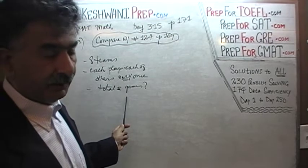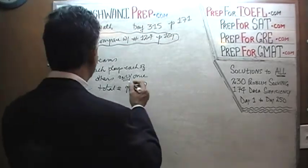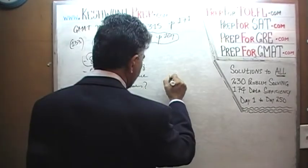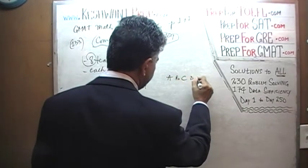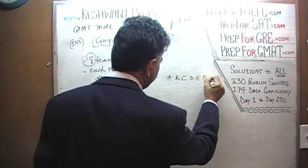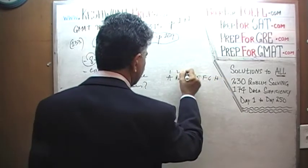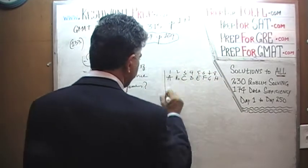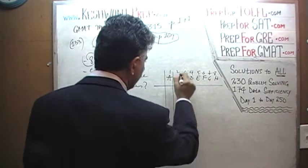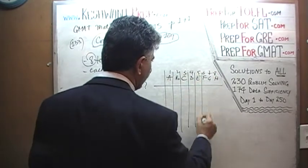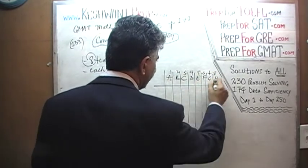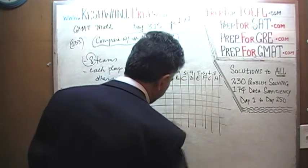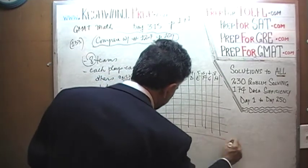We have 8 teams: A, B, C, D, E, F, G, and H. That's 8 teams. We set up a grid — 8 teams along the rows and 8 teams along the columns.